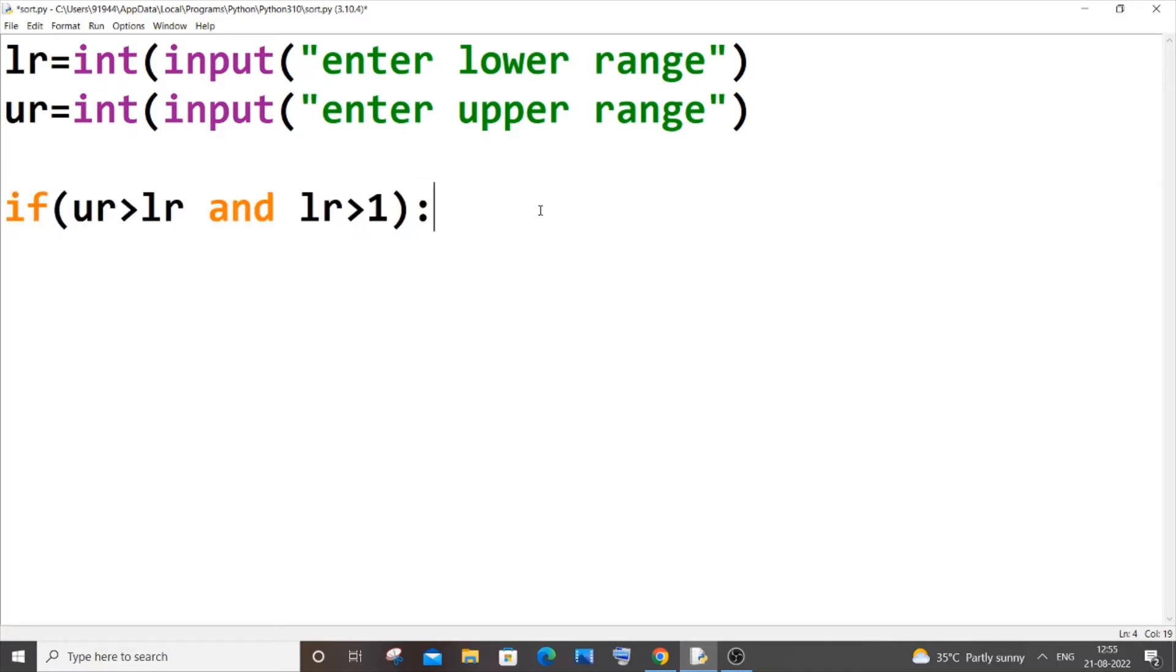In the next line we will be having a for loop that iterates from this lower range till the upper range. So it's going to be for, let me name it as num in range, it's going to be lower range comma upper range plus 1 because range is minus 1, so we will be putting plus 1 for the upper range.